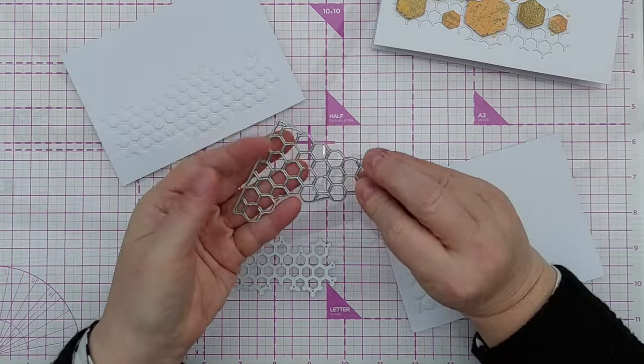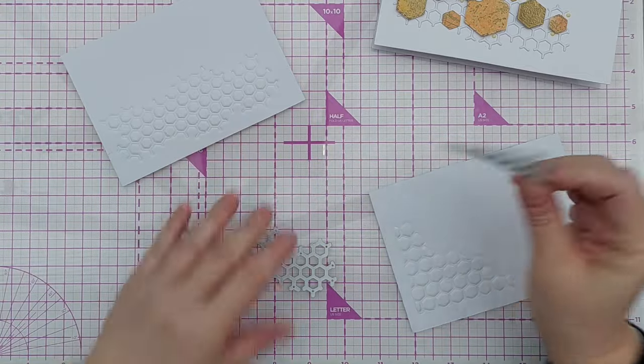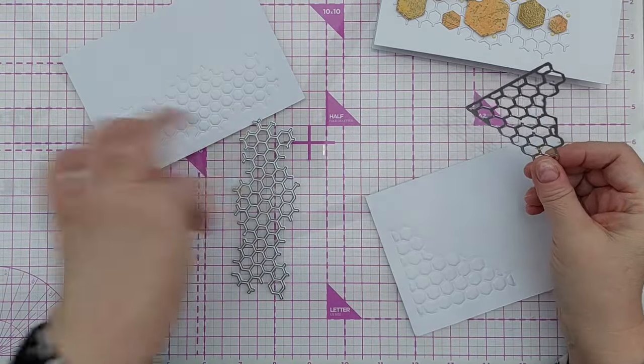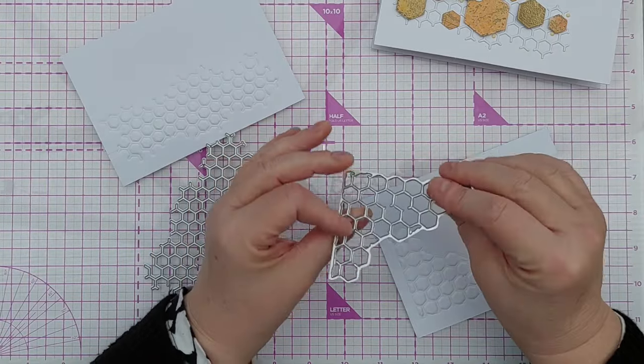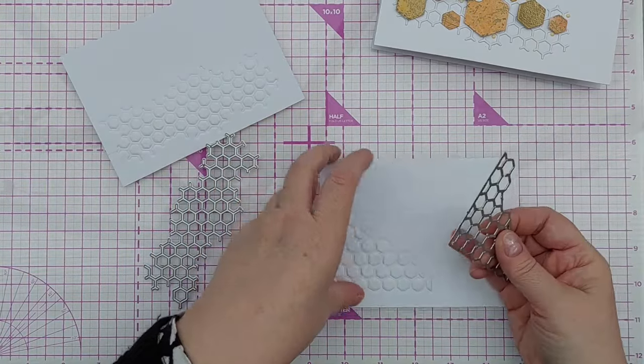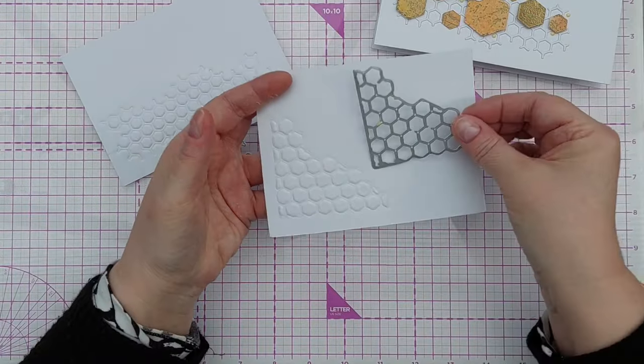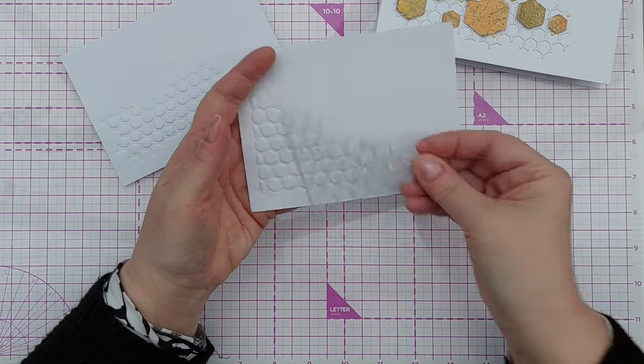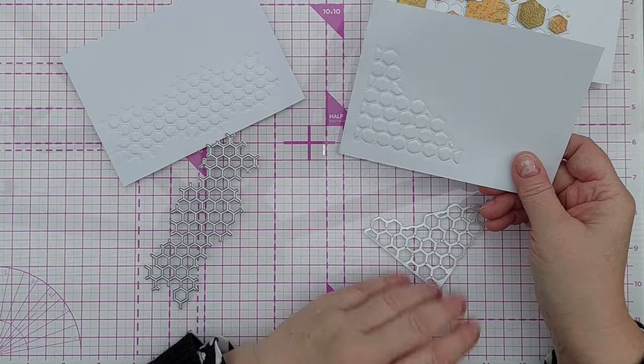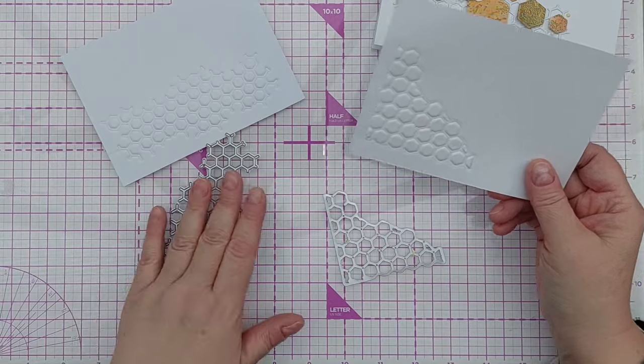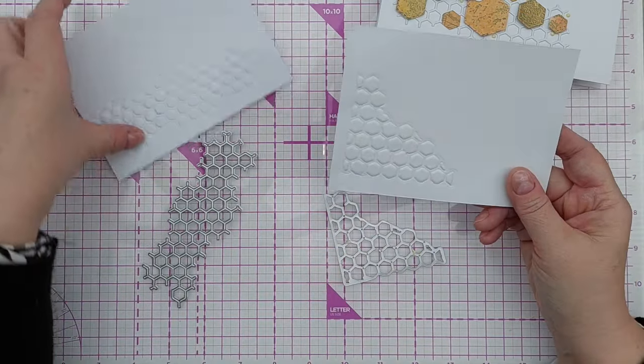This is another hexagon type die, it's an aperture die. So this is a net die where you get the net, this is an aperture die where it cuts the hexagons out of the panel. I just did exactly the same thing - I embossed with this die in the same way using my cuttlebug and I've got a lovely hexagon shape there. So whatever you've got, whether that's a net die or an aperture die, you can still emboss on the background like that.